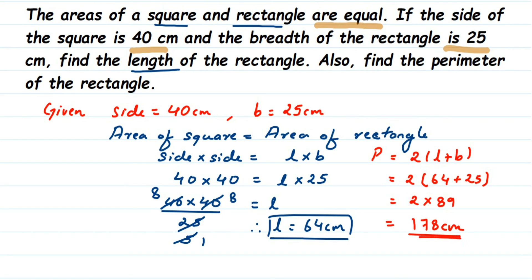The perimeter is 178 centimeters. This is an important type of question you can expect for 3 or 4 marks. They may change the numbers, but will give you statements like the areas are equal or perimeters are equal and ask you to find the missing values. If you have other questions or doubts on any chapter or concept, drop a comment and I'll try to make a video on it. Thank you for watching.